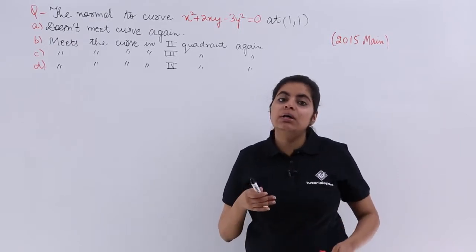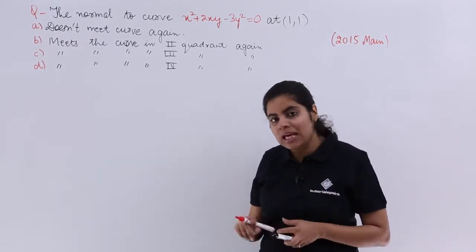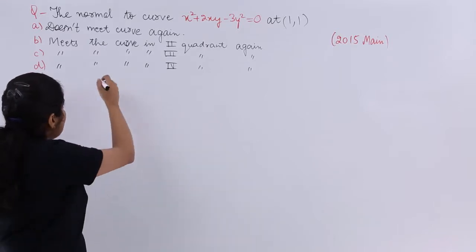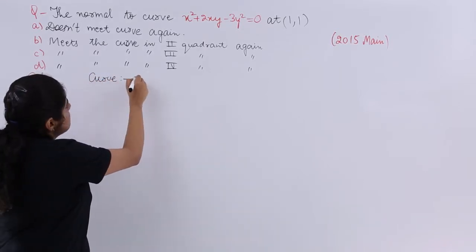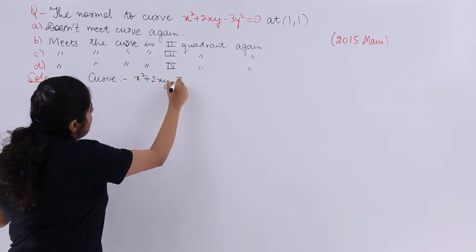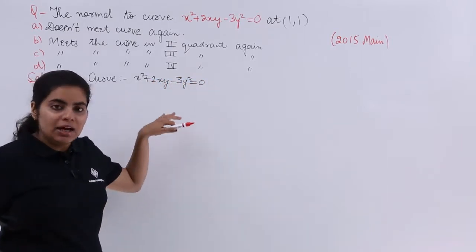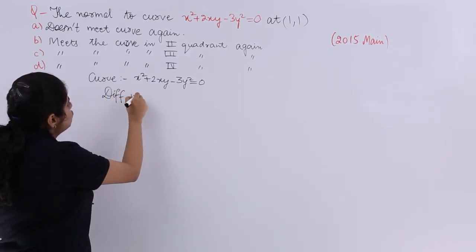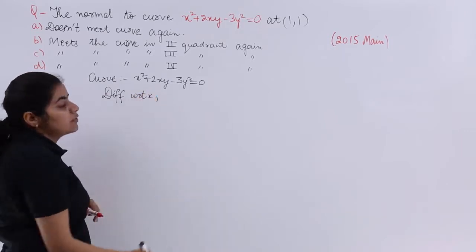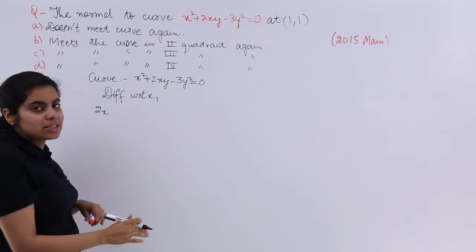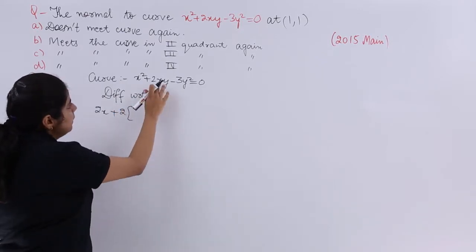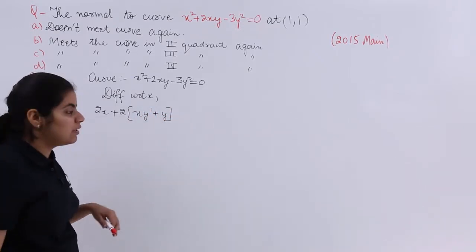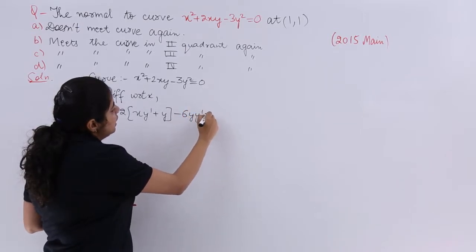We have to find the meeting point. For that, let's first find the derivative. The curve equation is x² + 2xy − 3y² = 0. Differentiating with respect to x gives: 2x + 2(xy' + y) − 6yy' = 0, where y' is dy/dx.